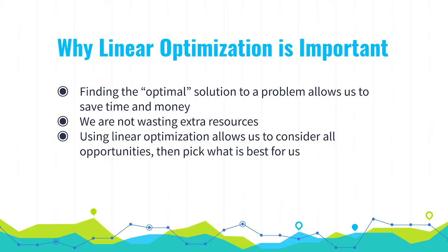Why is linear optimization important? In order to find the optimal solution, we have to go through a series of equations and thought processes to find what is best for us. Finding this optimal solution allows us to save time and money, and we avoid wasting extra resources. Linear optimization allows us to consider all opportunities and pick what is best, instead of just picking one possibility. Because there might be multiple solutions, but there's always one that is best for our situation.